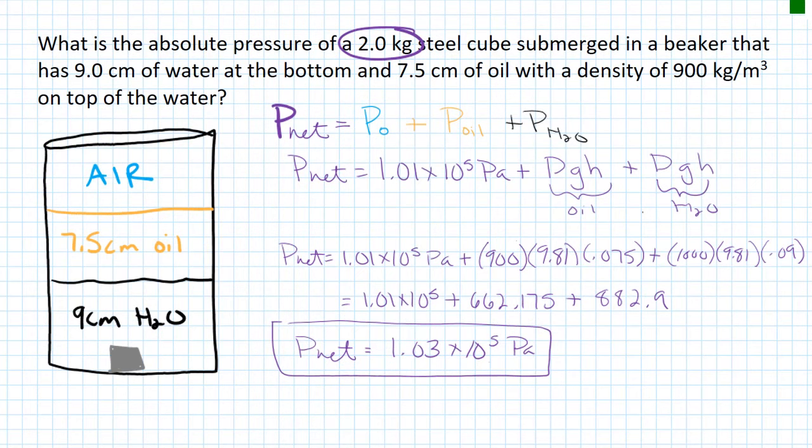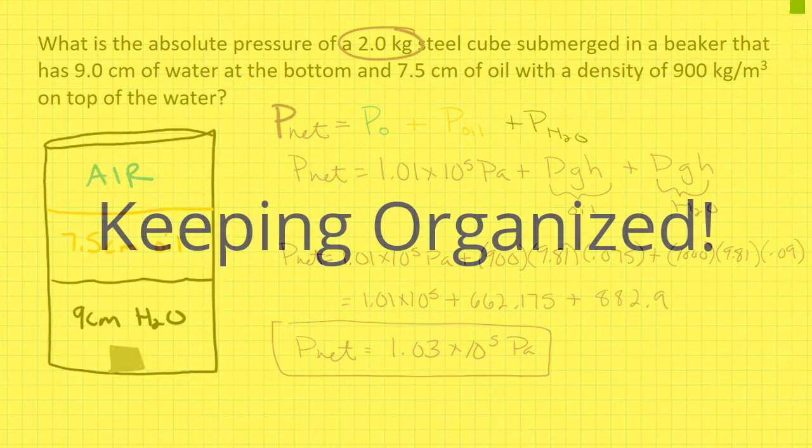Okay, this is a second type of pressure problem where we're dealing with an object that is submerged in a fluid. This is an open system. It's open to the atmosphere. It's not closed within tubings or pipes. I'm going to go ahead and draw this out so you can kind of see what we're looking at. We have a beaker or a cup of water, a beaker that has water on the bottom. Okay. Nine centimeters of water down here. So nine centimeters of water on the bottom. And then above that, we have 7.5 centimeters of oil.